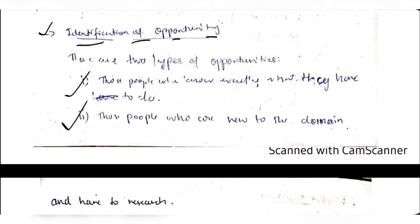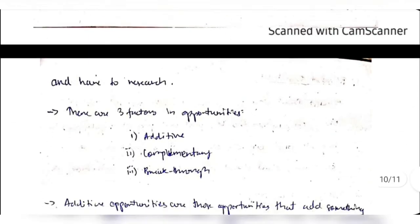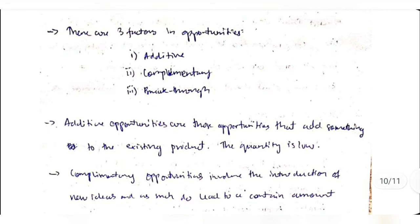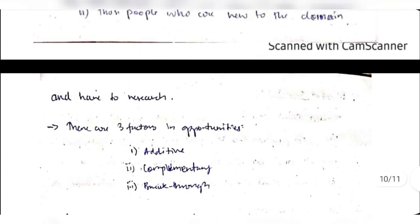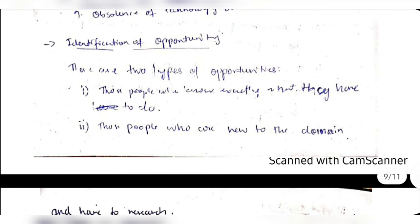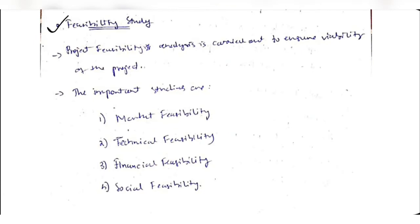Identification of opportunity is very important. There are two types of people: those who already know what to do and those who are completely new to it. These two groups will have different types of opportunities. There are three factors: additive (adding small ideas), complementary (changing what's already going on to make a big difference), and breakthrough (a very large-scale change). Based on these three factors, both experienced and completely new entrepreneurs can identify their opportunities.